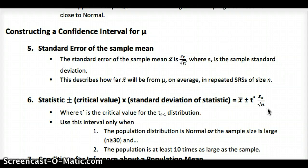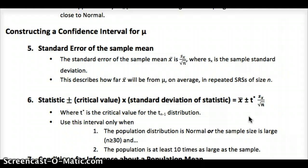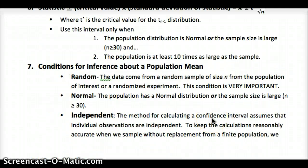We have to make sure that we have the random, normal, and independent conditions met, just as before. Conditions are just like we went over in the previous chapter: random, so you know the mean of the sampling distribution is the true mean; a big enough sample size so we know it's normal — greater than or equal to 30, or that the population is normal; and that we're not sampling more than 10% of the population so the independent condition holds up. For the critical value of t, we take the sample size minus 1 and consult the table in the back of the book for the correct value depending on the confidence level. The table also lists the confidence level at the bottom, which makes it a little easier.